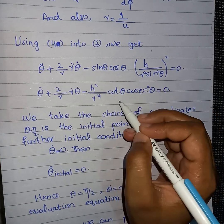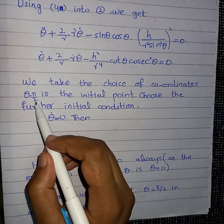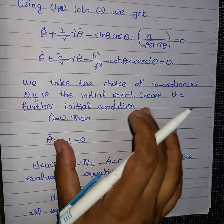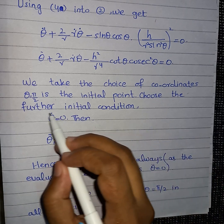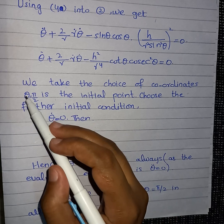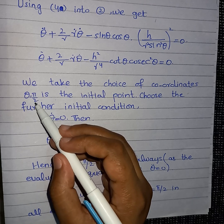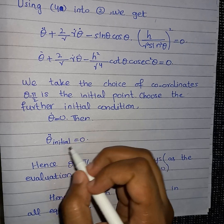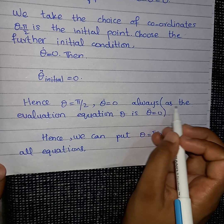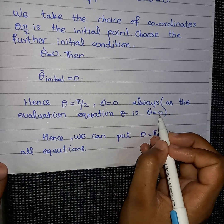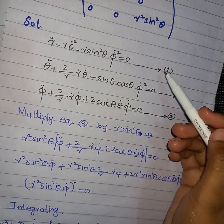Taking the square and simplifying further gives the next equation. Now we take the coordinate choice θ = π/2 as the initial point, restricting θ to 90 degrees in spherical coordinates. Taking the derivative of θ̇ gives zero because the derivative of a constant with respect to S vanishes. So θ̈ = 0 as well. Hence θ = π/2 gives θ̇ = 0 always, satisfying the equation θ̈ = 0.